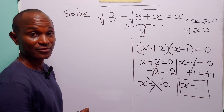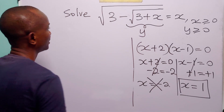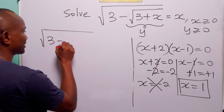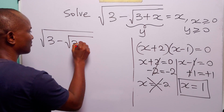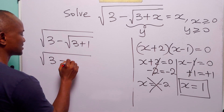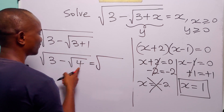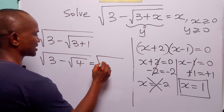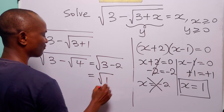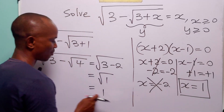Now to check our result, all we have to do is substitute x equals 1 into the original equation. We have the square root of 3 minus the square root of 3 plus 1, which is the square root of 3 minus the square root of 4. The square root of 4 is equal to 2, so this is equal to the square root of 3 minus 2, which is the square root of 1, which is equal to 1. And x is equal to 1. ✓